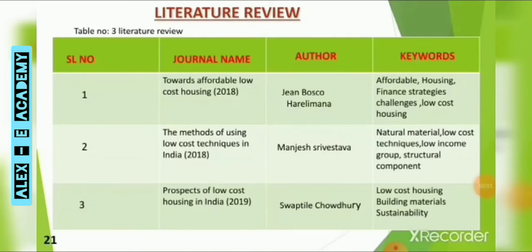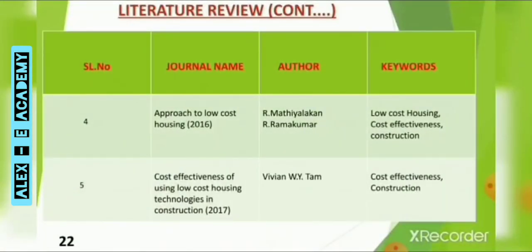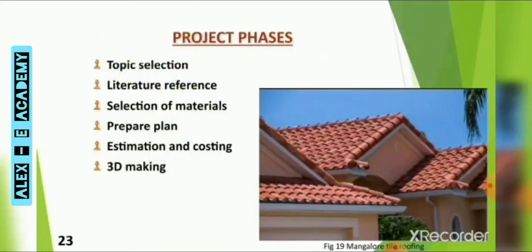The next section is literature review. These are some journals that we referred to as part of our project. The keywords of these journals include low-cost construction techniques, cost effectiveness, building materials, and construction. The next is project phases, where we mention our project plan and the steps through which we plan to complete the project.